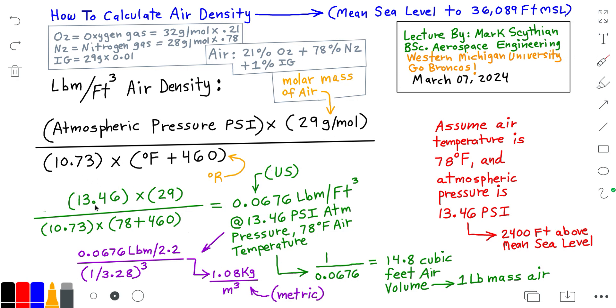The atmospheric pressure in psi is multiplied times the molar mass of air, 29 grams per mole.